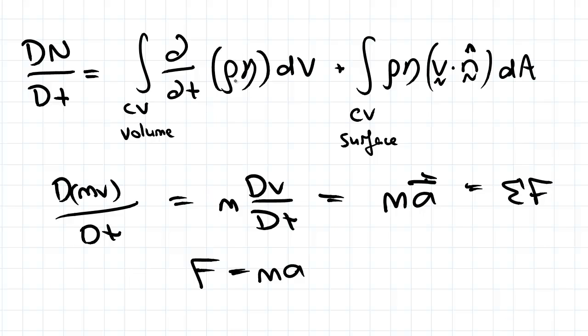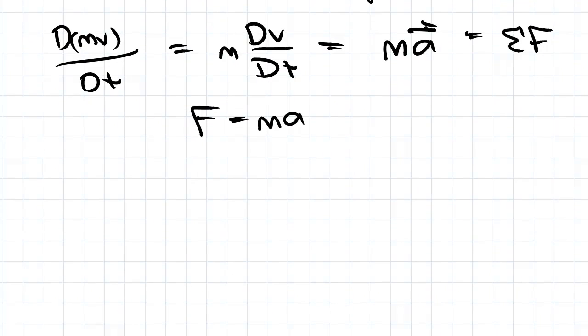Now going to eta. Remember eta was n on m. So that property n in this case is mv divided by m and we get v for eta.